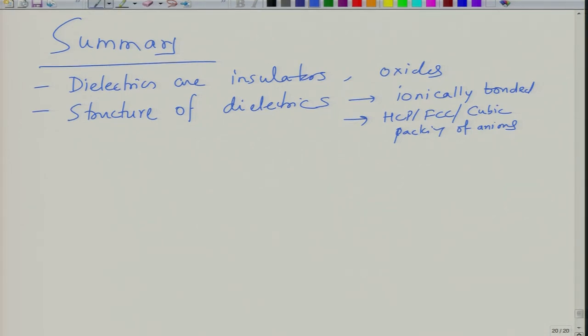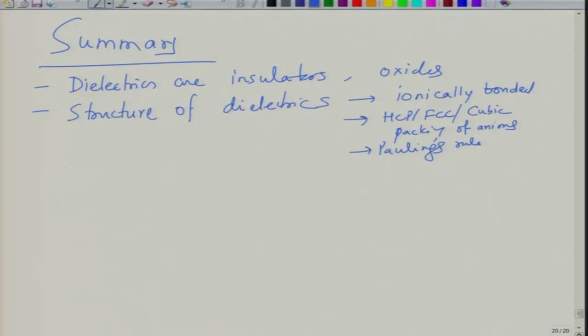These structures generally follow what we call Pauling's rules, which are based on electrostatic considerations. The idea is to ensure that cations and anions are close to each other, while like ions stay away from each other, so that you have minimum electrostatic energy of the system. We looked at various structures of these dielectric materials, and after that we looked at defect chemistry.